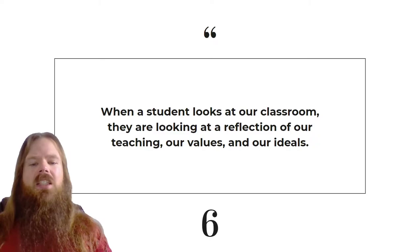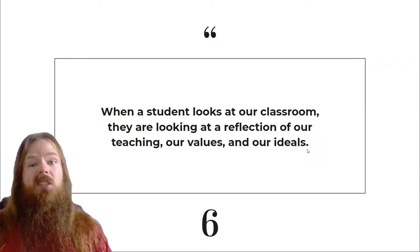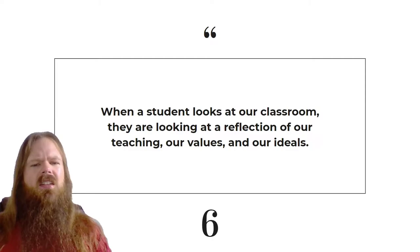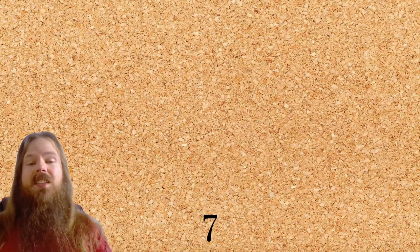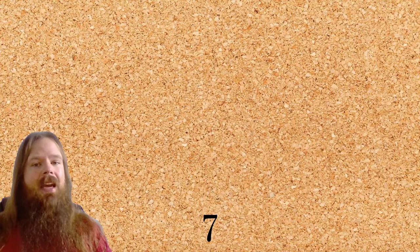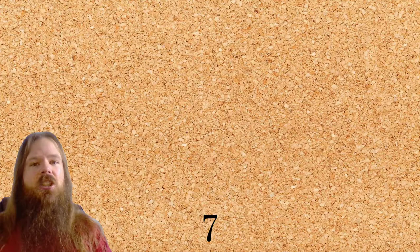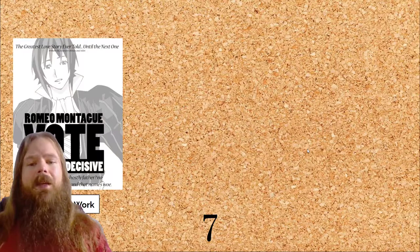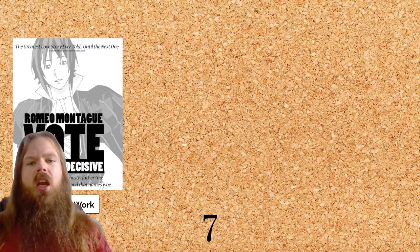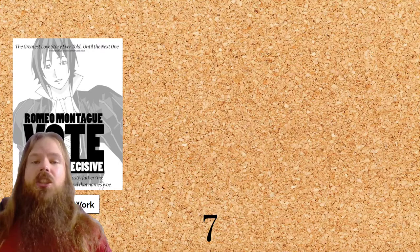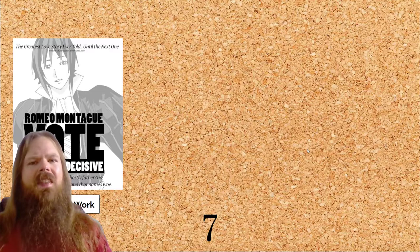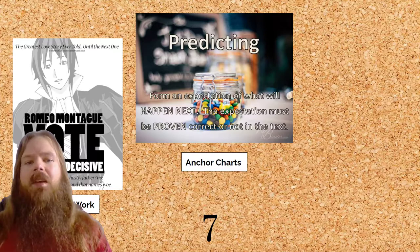Now, when a student looks at our classroom, they are looking at a reflection of our teaching, our values, and our ideals. This is one of the first things that students see when they walk into a classroom: a corkboard. Some are completely bare with nothing on them. Others have been brightly painted and covered with all sorts of things that let students know that they are welcomed and valued. Some examples might be student work — posters or even written assignments. If you come into this knowing that student work should be posted in the classroom, students will know that their work is valued, and they'll want to put their best efforts forward.